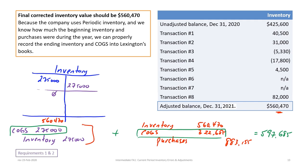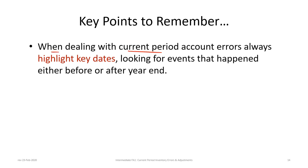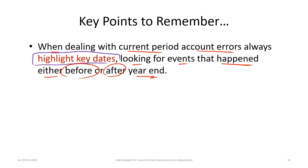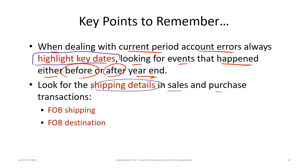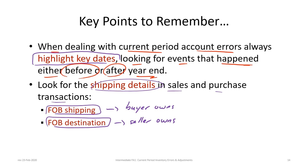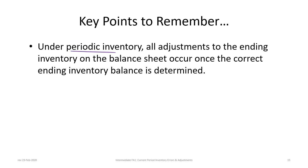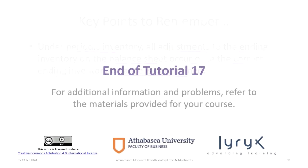To wrap up, key points to remember: when dealing with current period errors, highlight key dates and look for events before or after year end to identify items that should or should not be in inventory. Always check shipping details — FOB shipping means the buyer owns the goods, while FOB destination means the seller retains ownership until delivery. Under periodic inventory, all adjustments to ending inventory occur once the correct ending balance is determined. This concludes Tutorial 17A.